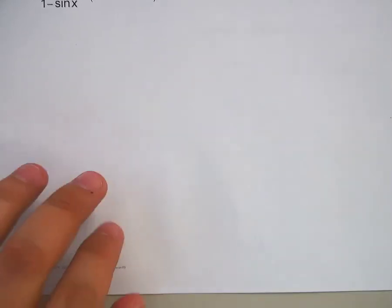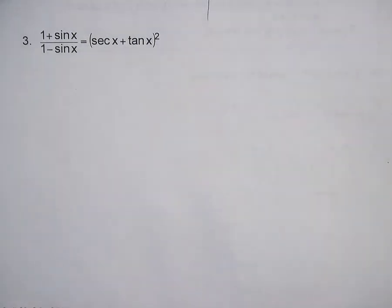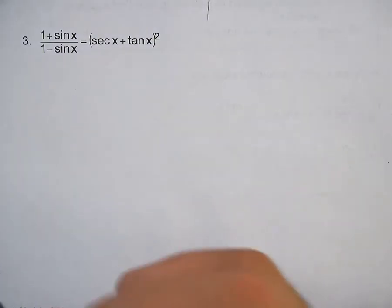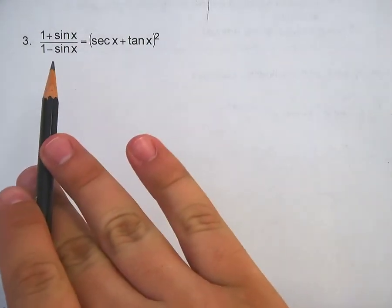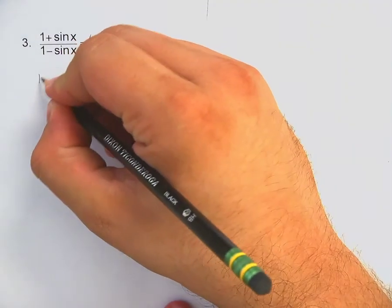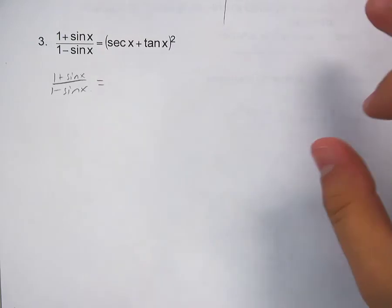All right, let's do number 3. Number 3 is so sweet and unimposing looking — you'd never guess. It's: 1 plus sine x over 1 minus sine x equals (secant x plus tangent x) all squared. Holy moly. When I ask which side looks more complex, a lot of people will default to that fraction — but look at it: 1 plus sine over 1 minus sine. Is there anything we can do with that? There's not a thing. So I'm kind of stuck choosing the right-hand side.